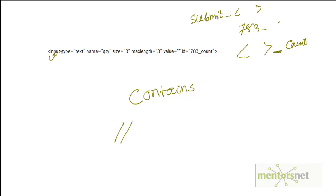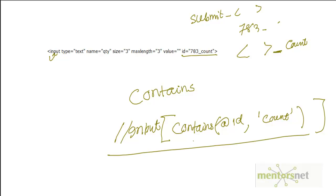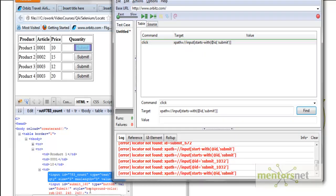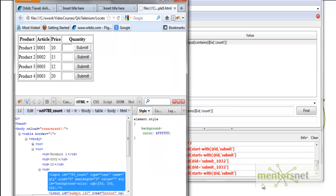Let's rewrite this XPath. We have double-slash because the element is input, so therefore input. Then we start the bracket, and we use the function called contains. What do you have? We have id 7834_count. So we write at-rate id comma 'count'. That's all. If you do this, then even if you refresh the page, whatever number you get, it will still find that location because we are matching on the static part 'count'.